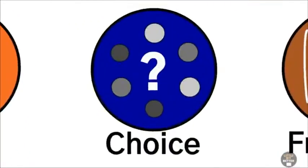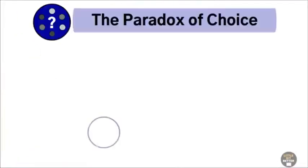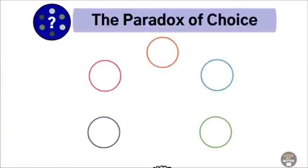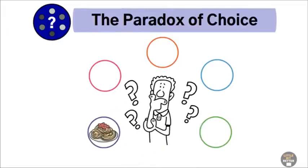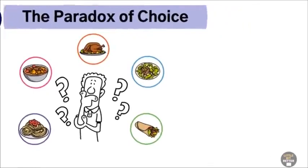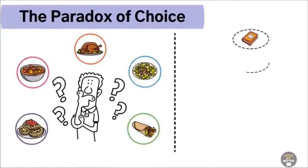The paradox of choice. The paradox of choice is when having too many options makes it harder to make a decision. For example, have you felt overwhelmed while choosing from a menu with 50 dishes? To counter this, limit your own options and the options you give to others.